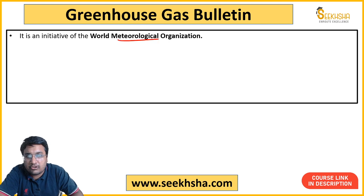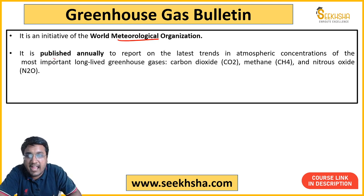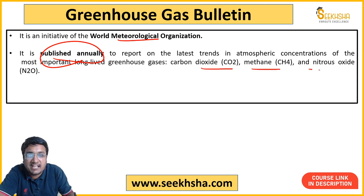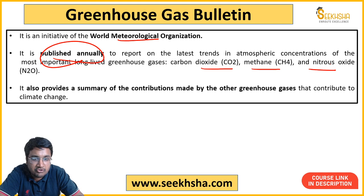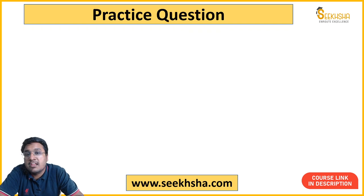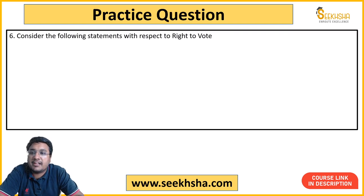The Greenhouse Gas Bulletin is a World Meteorological Organization initiative, published annually. It maps the concentrations of various greenhouse gases like CO2, methane, and nitrous oxide, as well as other gases that impact climate change.